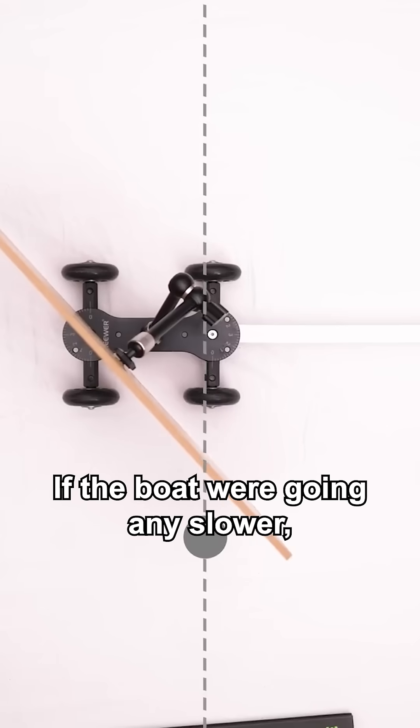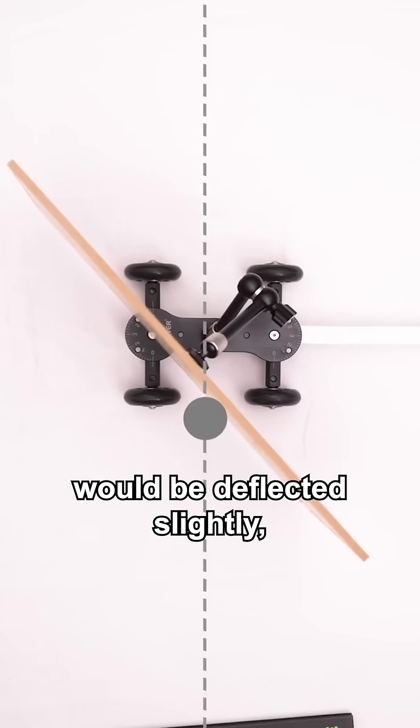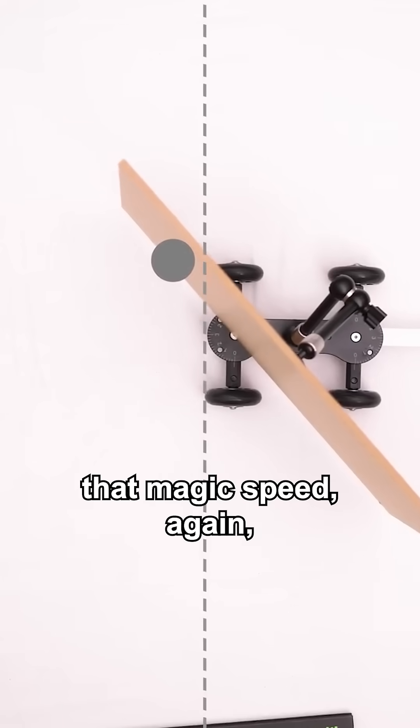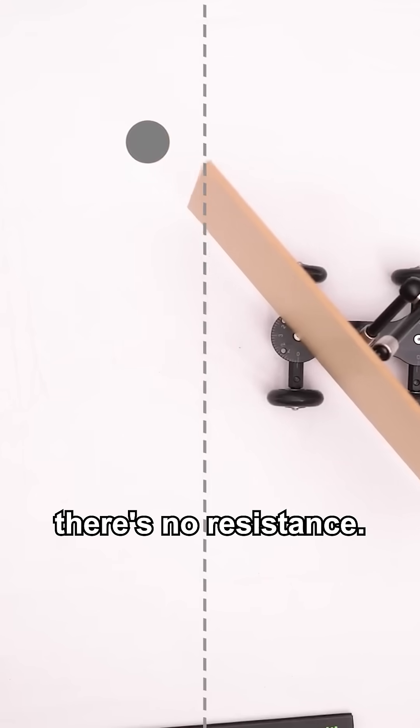If the boat were going any slower, that packet of air would be deflected slightly. And so the boat would increase in speed until it reached that magic speed. Again, this is all assuming that there's no resistance.